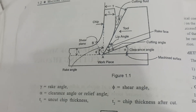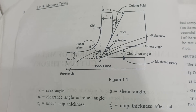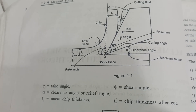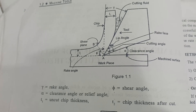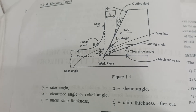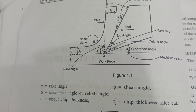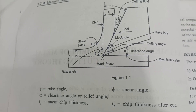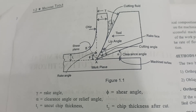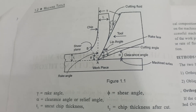In the diagram, alpha (α) is the clearance angle, phi (φ) is the shear angle, and gamma (γ) is the rake angle. T1 is the uncut chip thickness, and T2 is the chip thickness after the cutting operation.